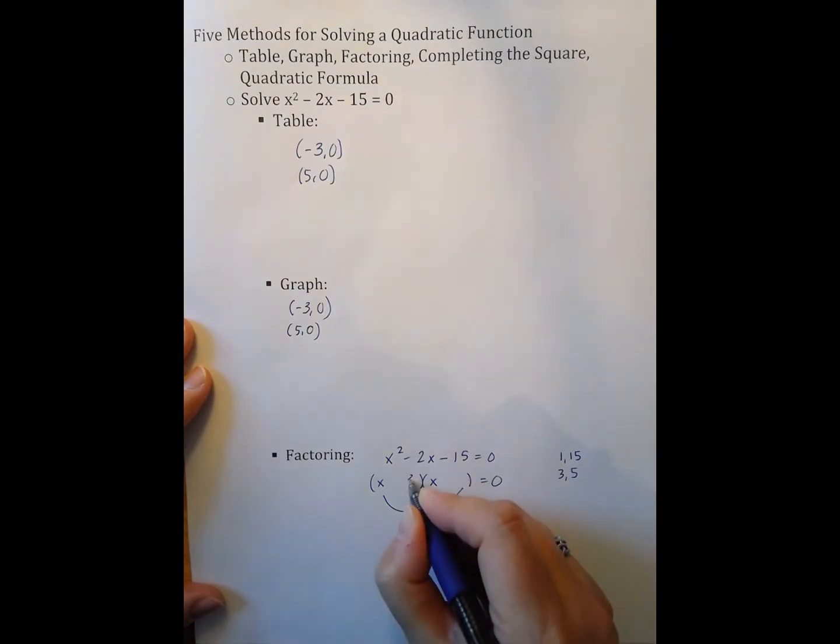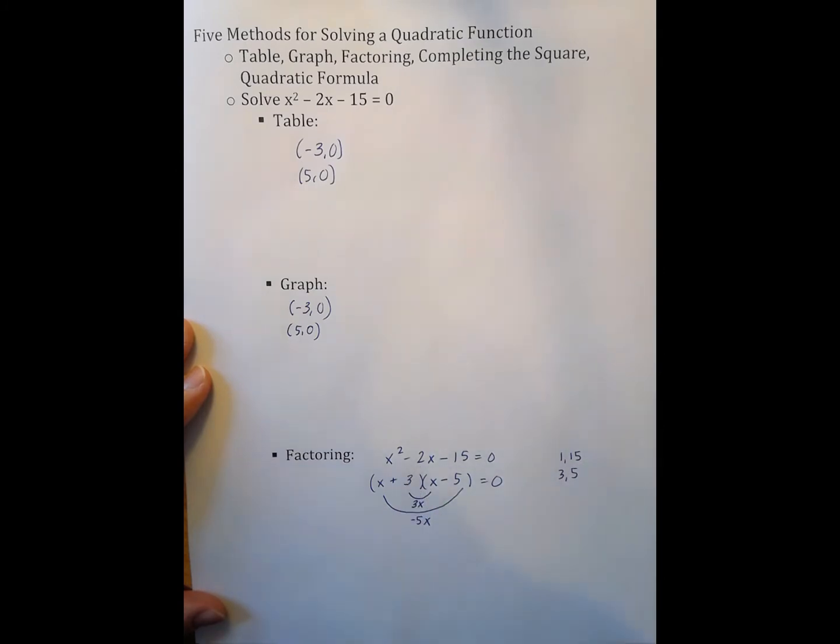So that this part, when I multiply this out, that these two values equal negative 2x. So 1 and 15 don't have a difference of 2, but 3 and 5 do. So I have 3 and 5. And if I want the 2 to be negative, then it must be that my 5 is negative. Just to double check, I have 3x and negative 5x, which, when I combine those like terms, does indeed equal negative 2x.